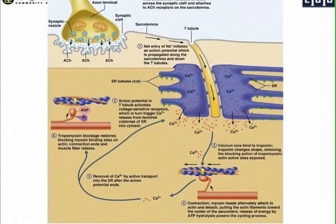There are also calcium channels on the terminal cisternae of the sarcoplasmic reticulum, which are found right over here. Calcium is then released from these channels into the sarcoplasm.